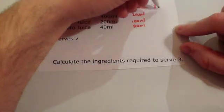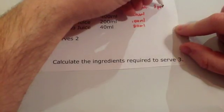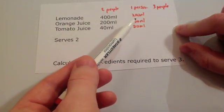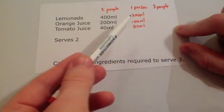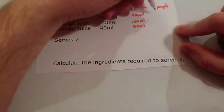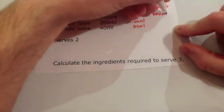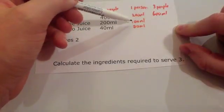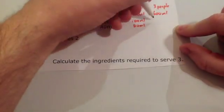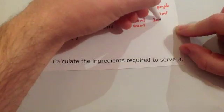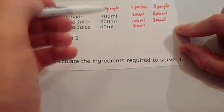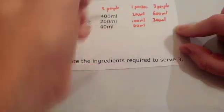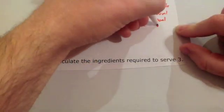So let's find three people. One person needs 200, so three people: three times 200 is 600 ml. If one person needs 100 ml, three people would need 300 ml, times it by three. And if one person needs 20 ml, three people — three times 20 — would need 60 ml.